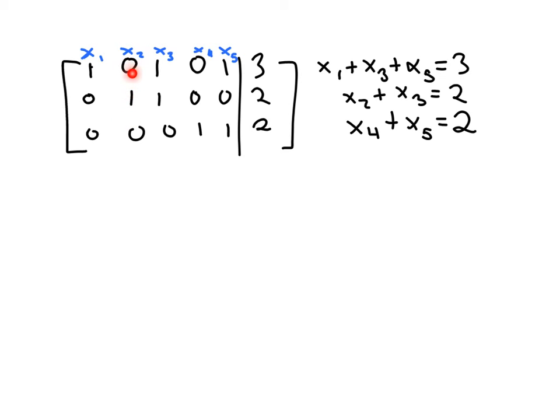So x2 is a basic variable. And the next pivot is here in the x4 column. So the basic variables are x1, x2, and x4.